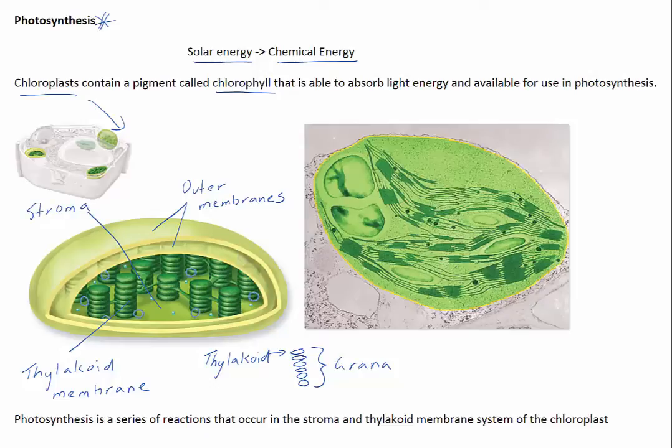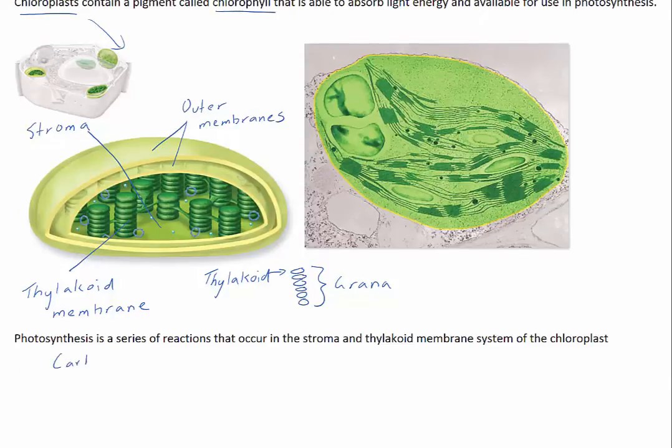Photosynthesis is a series of reactions that occur in the stroma and thylakoid membrane system of the chloroplast. During these photosynthesis reactions, carbon dioxide and water are combined to produce glucose and oxygen.